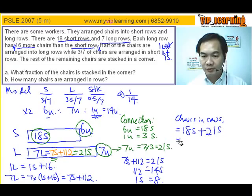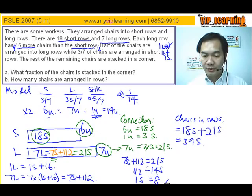Giving us 39 short rows. And every row here has got 8 chairs. So 39 times 8 giving us 312 chairs. That can be done.